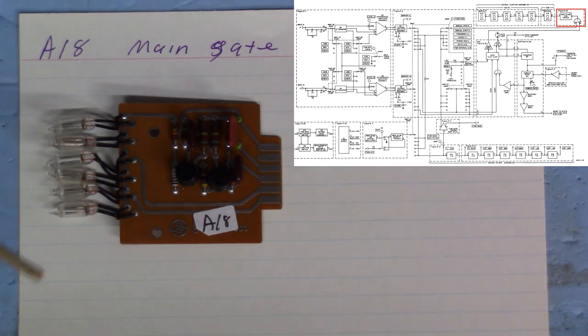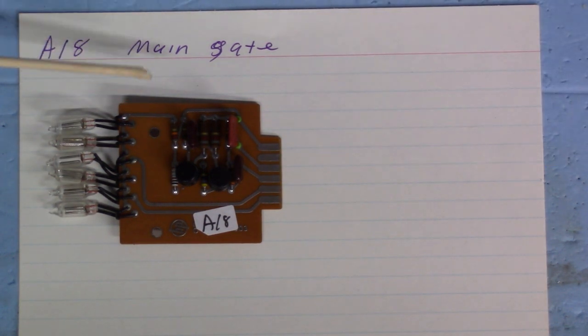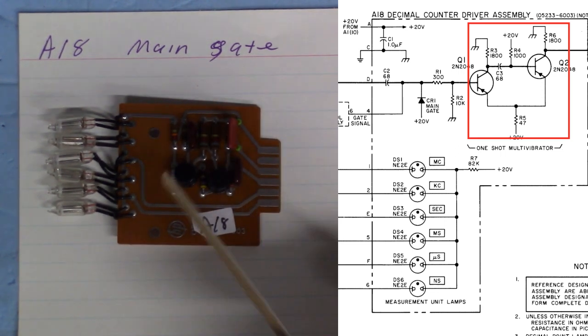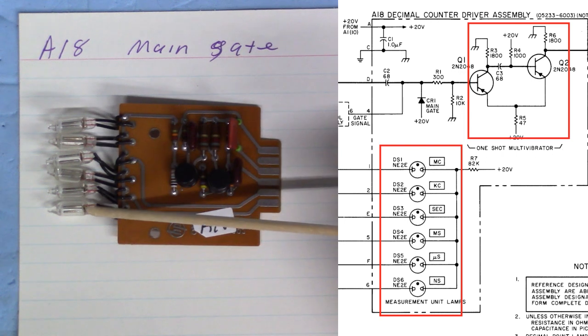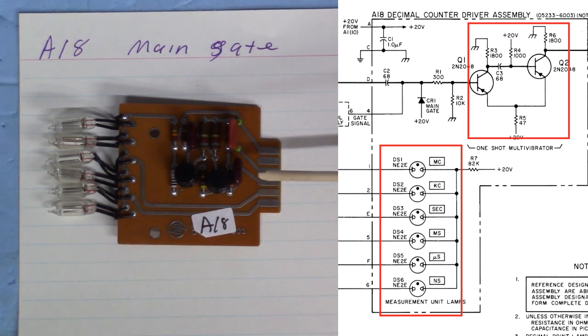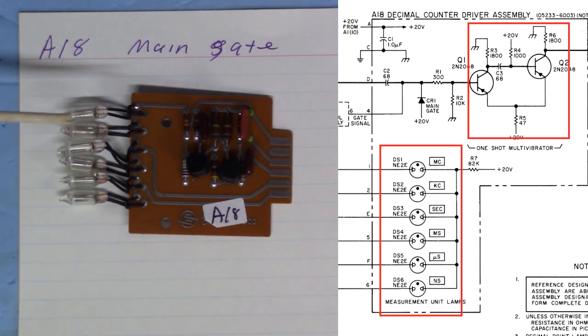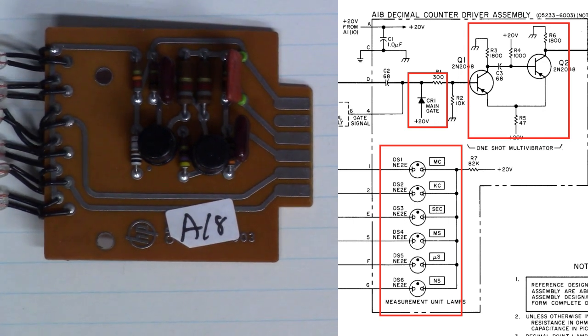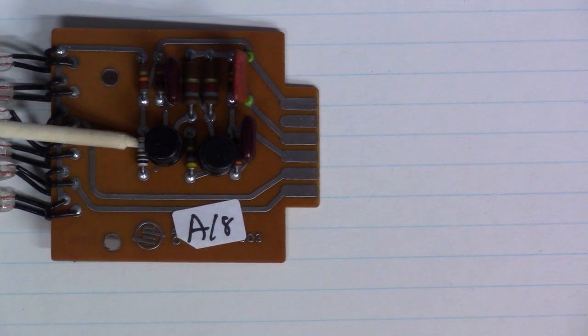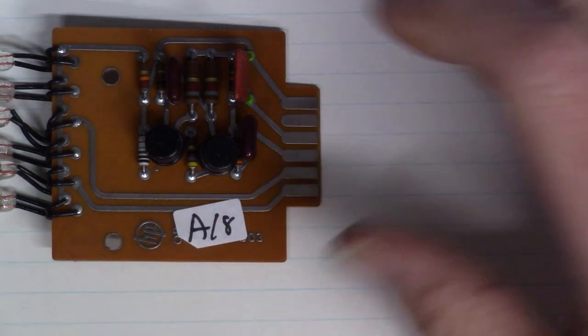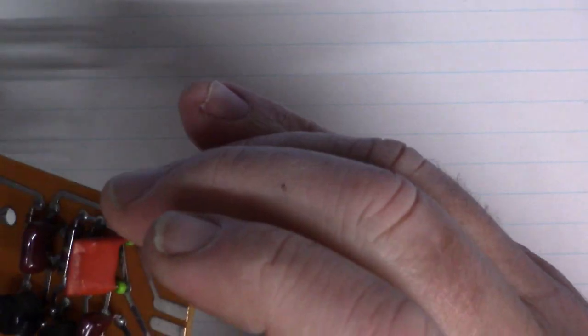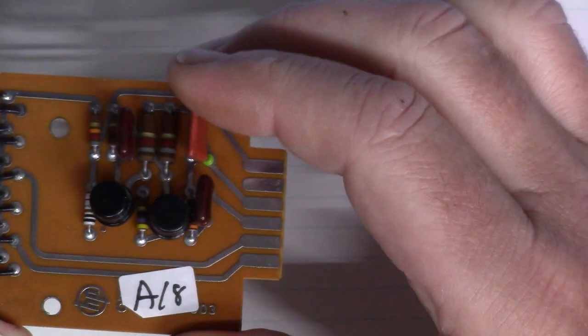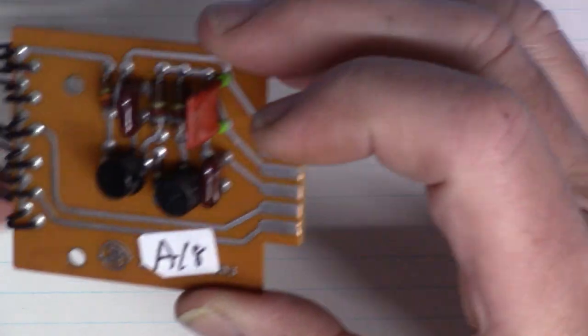Good old number 18, my absolute favorite board on the whole system, mainly because it has such a great function. It's the main gate slash decimal counter driver assembly. One shot multivibrator here, and then over here you have the neon bulbs for the decimal display. And they have absolutely nothing to do with this circuitry, it's just that they're all on the same card for space saving. But the actual most important part, if I zoom in a little, there's this little diode down here, diode resistor combination that's actually the main gate. Without that the whole system wouldn't work. Card looks fine, there's nothing wrong with it. Again those ferrite beads there and one microfarad ceramic capacitor for the timing on the multivibrator.